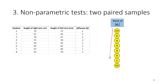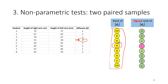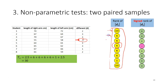With the ranks summarized, we assign the signs. All ranks are positive except one, which comes from a negative difference. The next step is to sum all the positive ranks — summing all positive-signed rank values gives a total of 30.